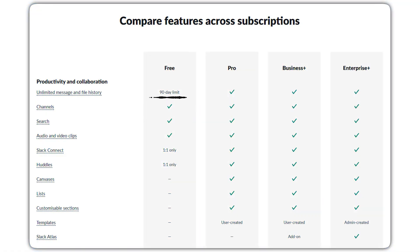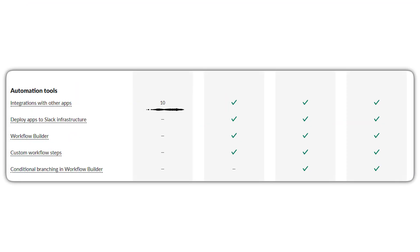Slack's free plan gives you 90 days of message history, up to 10 app integrations, and one-on-one messaging — good for small teams, but limited beyond that. The Pro plan is $8.75 per user per month, with a limited-time offer of $4.38 for the first three months, and includes unlimited message history, unlimited integrations, group meetings, and basic AI features like conversation summaries. Business Plus is $18 per user — currently $9 with the same discount — adding advanced AI tools, single sign-on, and user management features. Then there's Enterprise Plus with custom pricing. Slack's pricing climbs quickly as your team grows, especially if you want access to AI tools or admin controls.